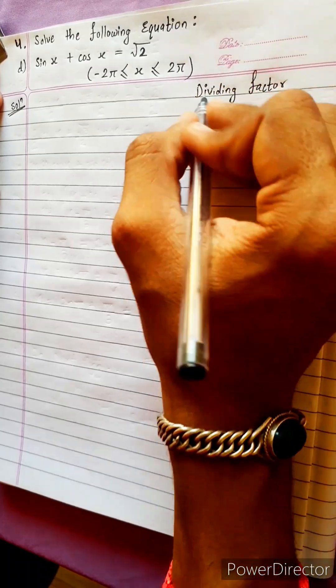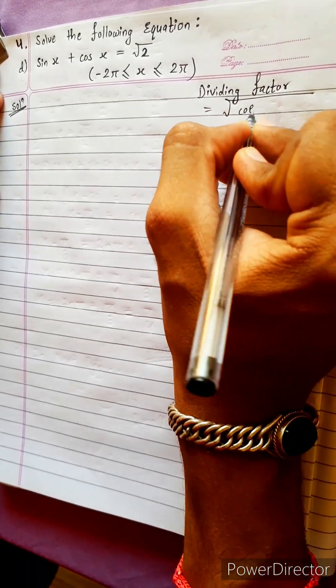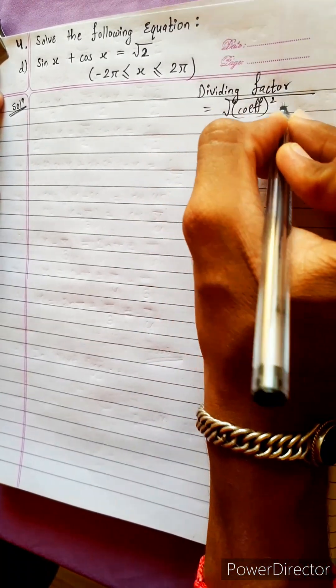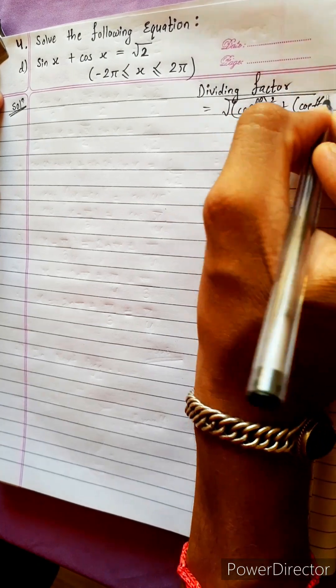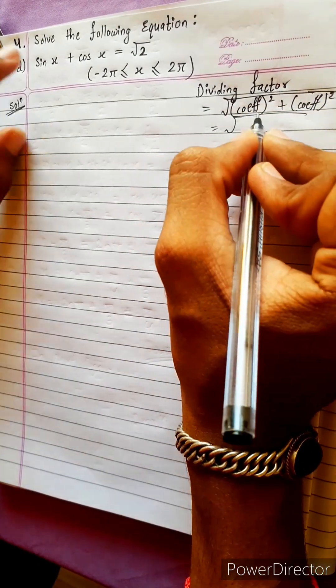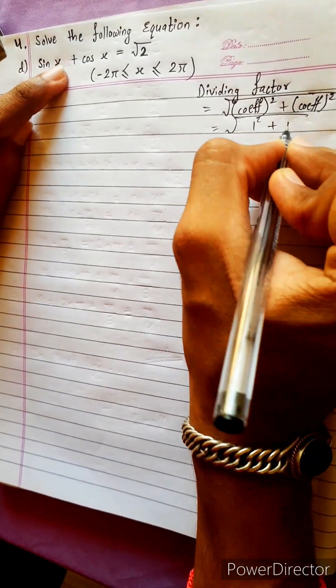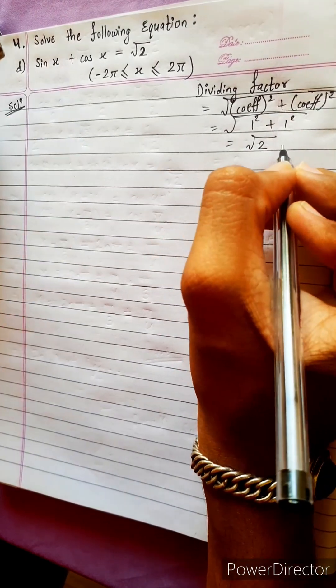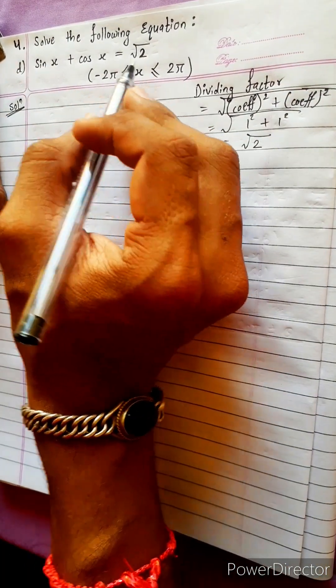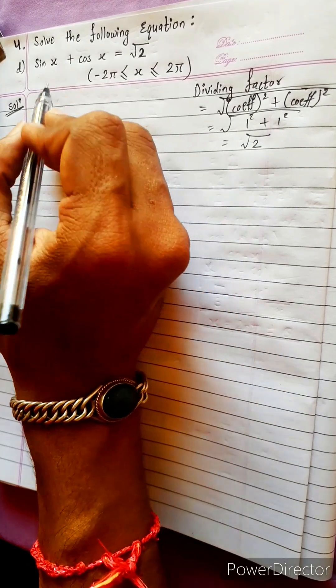Dividing factor. How to find dividing factor? First coefficient square plus second coefficient square. First coefficient also 1, second coefficient also 1. It will be root 2. So divide everywhere by root 2, or directly bring this root 2 to this side.